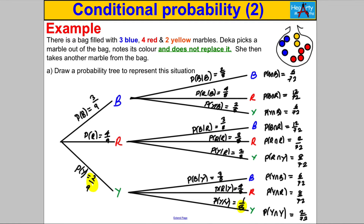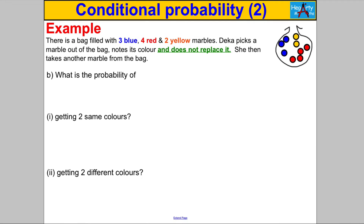And that is our complete probability tree to represent this situation. Now we may be asked some questions, and if you've got the probability tree, everything is nice and straightforward. So here are some of the questions we get asked.